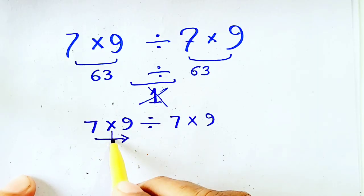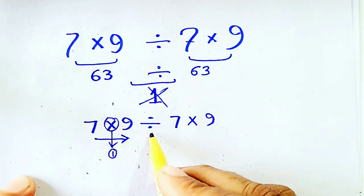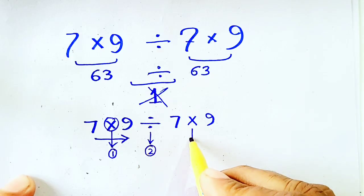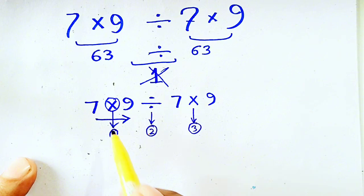So we have this one as first, this one as second priority, and third one as this multiplication.